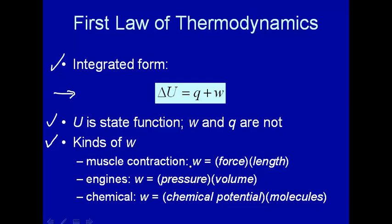One is muscle contraction. There, work is done as your muscles, say you're pulling on something, and you move at a certain distance, and you apply a certain force with your muscle. To figure out how much work you did, you multiply force times length.